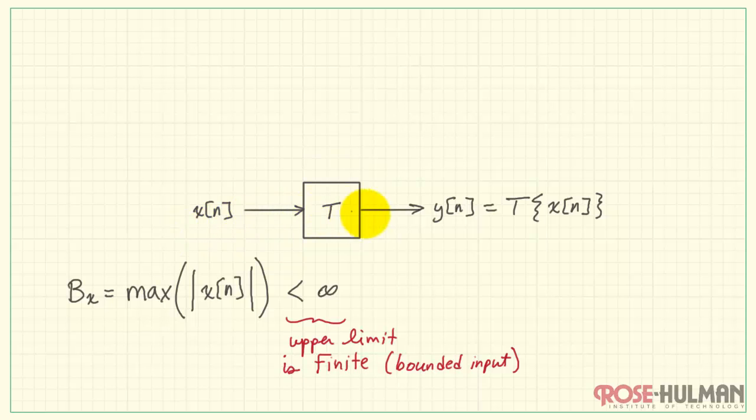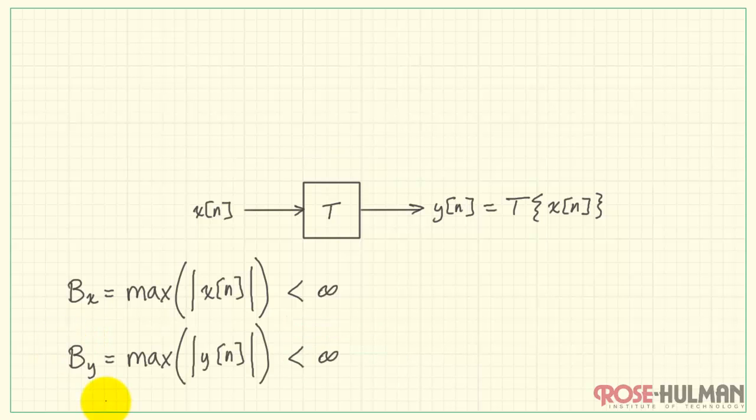Now, in a similar way that we did this on the input side, we can do so on the output side. And we can consider the bound on the output side and write that as b_y equals the maximum absolute value of the output sequence.